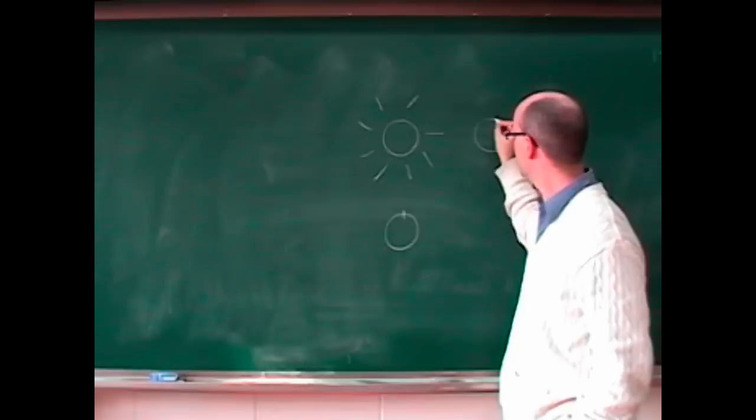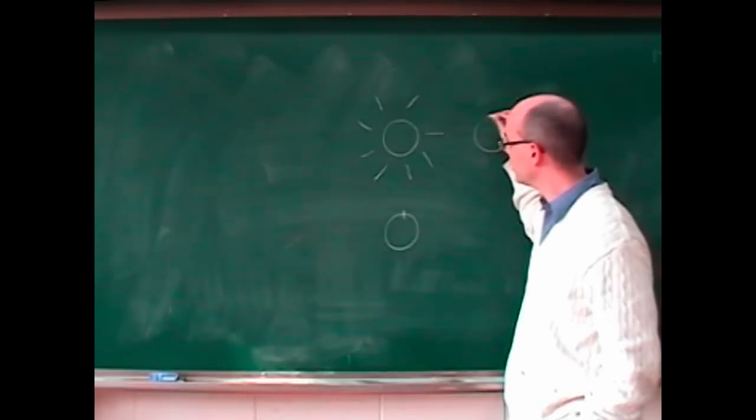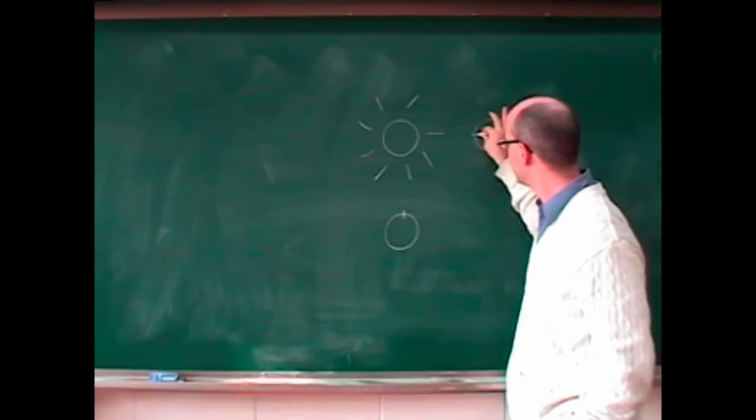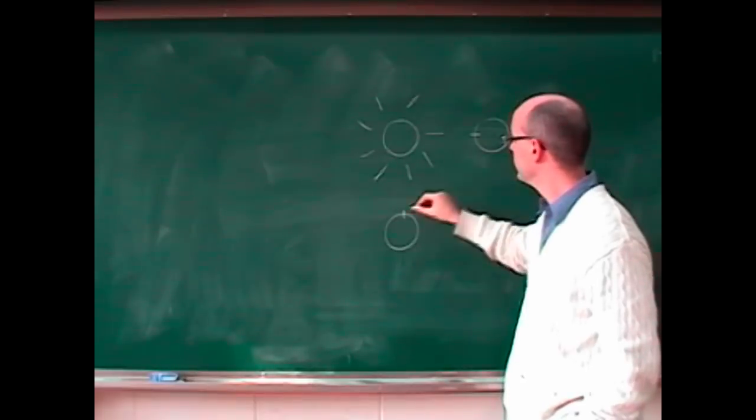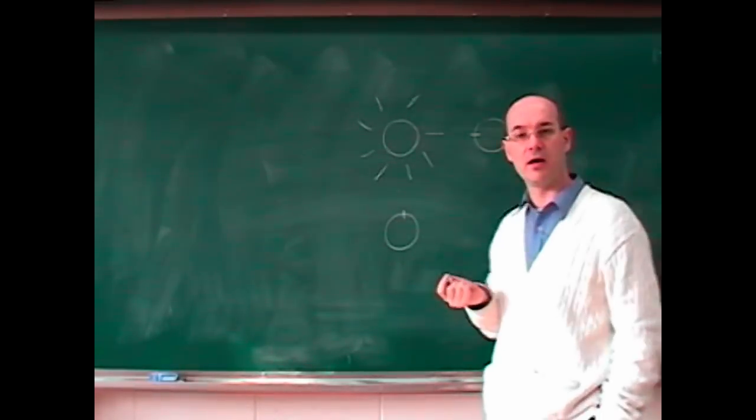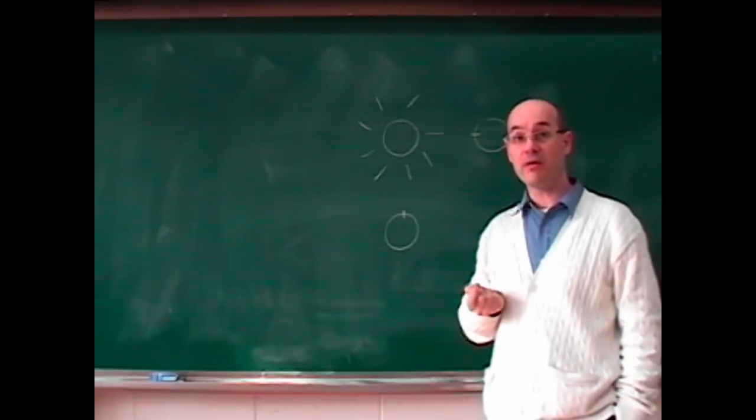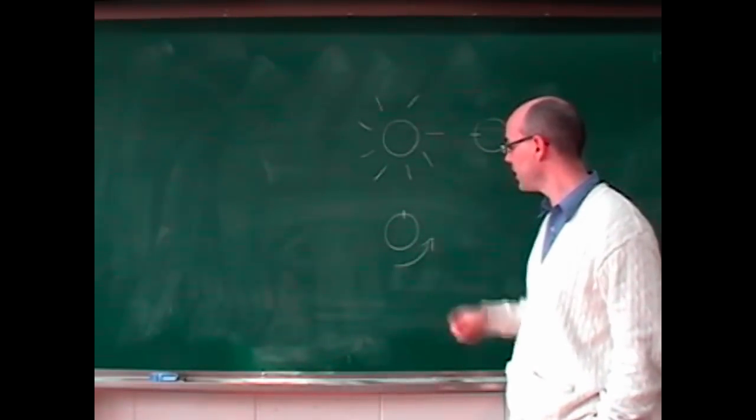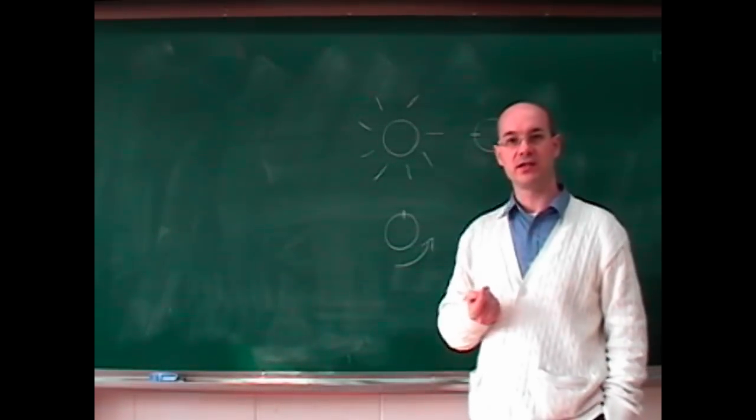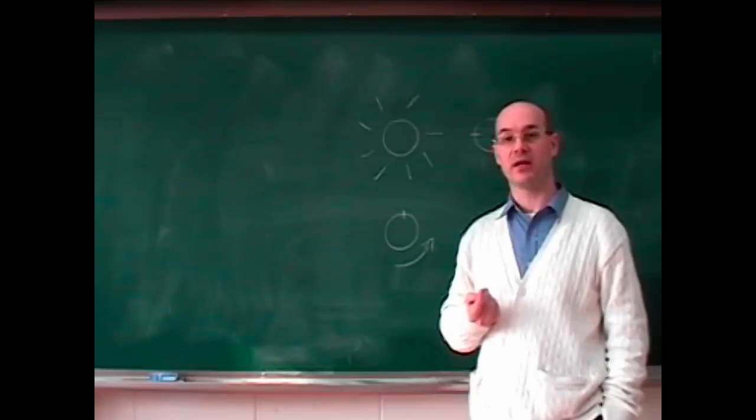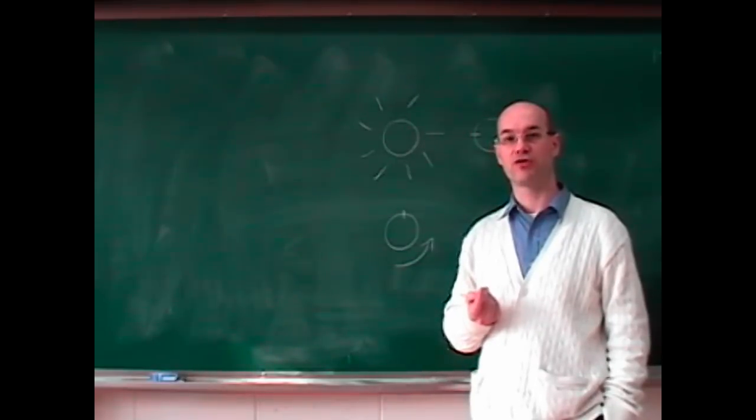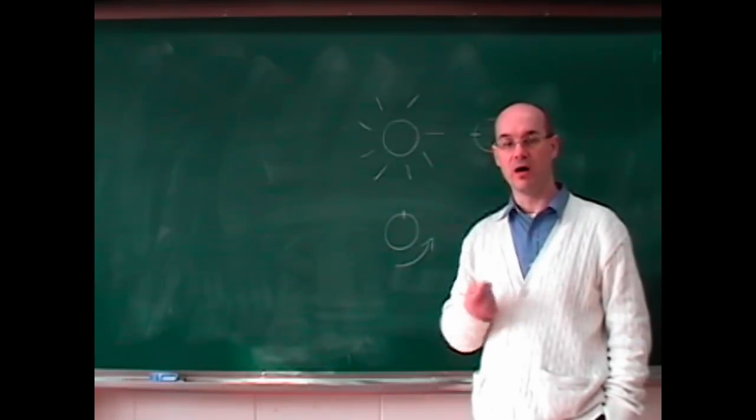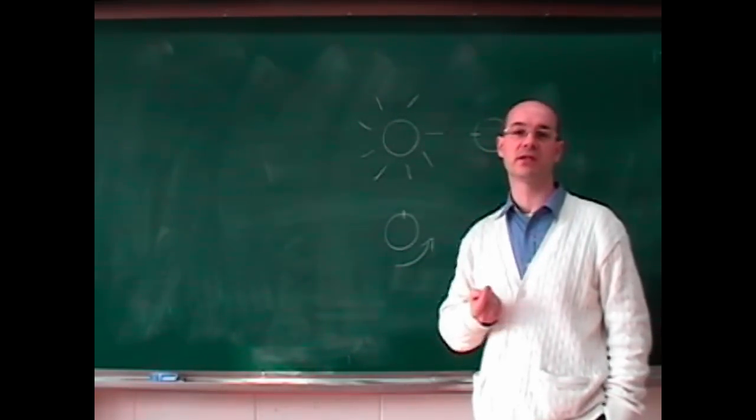And you count noon, not here, but you count noon when the Sun is at its highest point, which means there. And you haven't done 360 degrees, the Earth turning this way. You have done 360 degrees plus 90 degrees, actually a fourth of the 360 degrees.